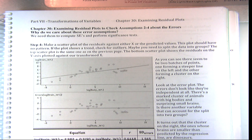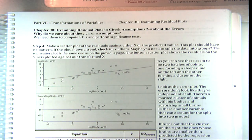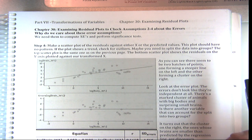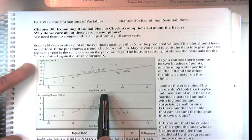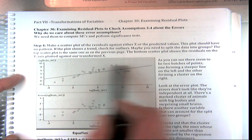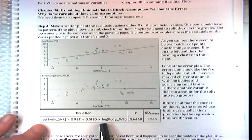We're continuing with this section on transformation of variables. We do this when we have a violation of our assumptions. We're continuing with the same example where we've logged body weight and brain weight of 34 species of animals — all land animals, mammals and dinosaurs combined. And we found this equation in logs, which gives a much better linear fit.